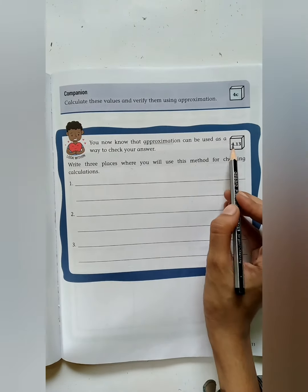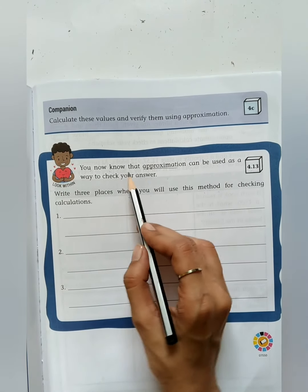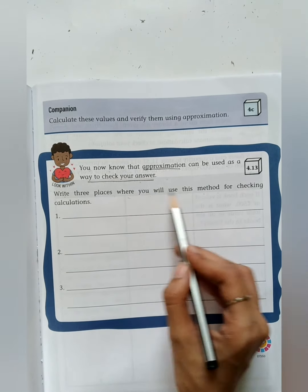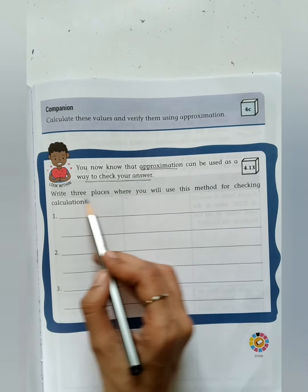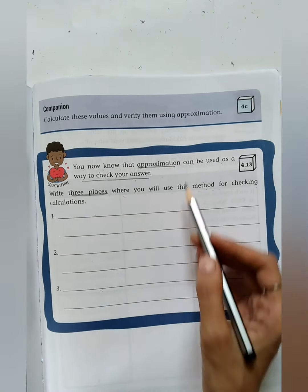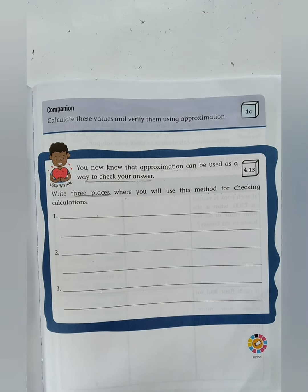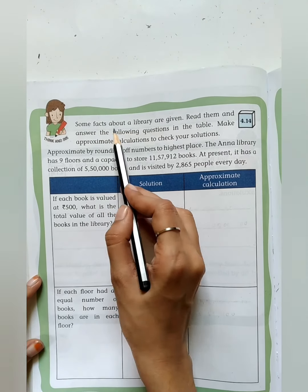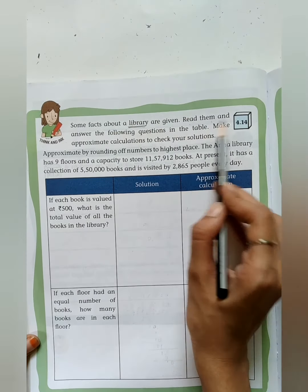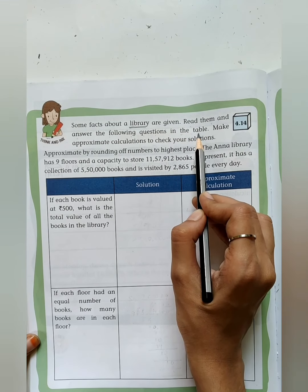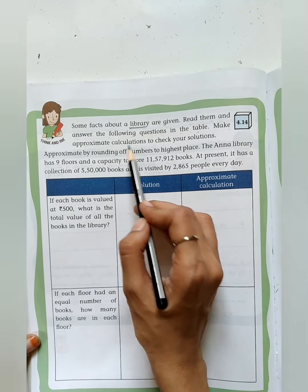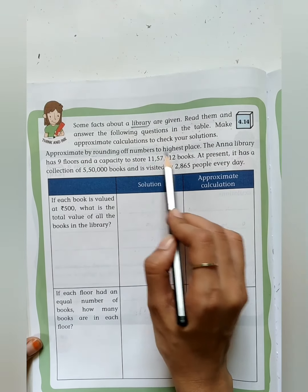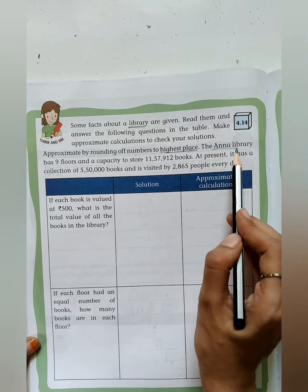Move on to the next page 4.13, Look Within. You now know that approximation can be used as the way to check your answer. Here you have to write three places: When will you use this method for checking the calculation? You have to mention the three places in the dash where we are using the approximation. Now just take the next page 4.14, Think and Ink.